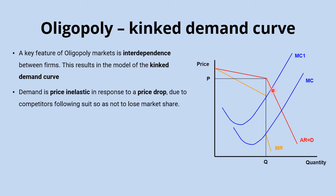If all rival firms cut their prices together, the oligopolist who cut first won't find a big increase in quantity sold, because all the customers' other options are also cutting prices simultaneously. For that reason, demand is price inelastic for price cuts — the price falls but doesn't have a big impact on quantity demanded — giving a relatively steep slope on the demand curve below the kink.